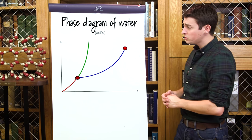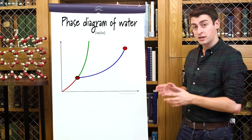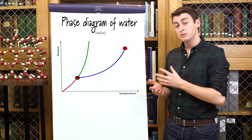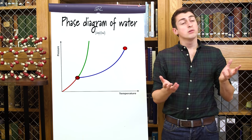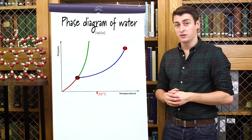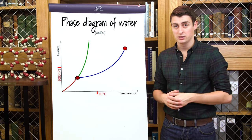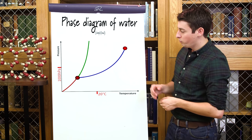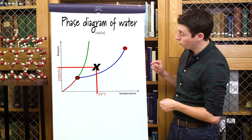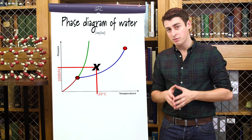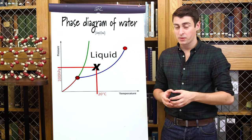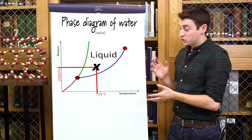On the phase diagram we have temperature along the x-axis and pressure along the y-axis. What this simply tells us is: say we're in a room at about 20 degrees Celsius and at atmospheric pressure — about 1000 hectopascals or 1000 millibars. What we can do is trace along our temperature and pressure and see that water is most thermodynamically stable in these conditions as a liquid. Each region of the diagram refers to a different state of matter — solid, liquid, or gas.